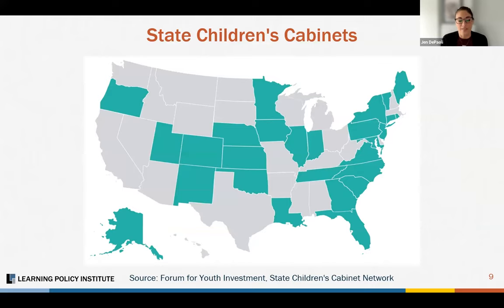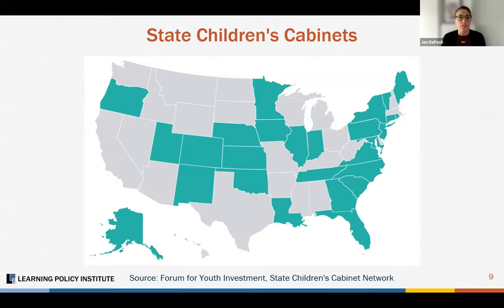Many states and localities have established children's cabinets to help achieve a whole-child vision and take a more collaborative and coordinated approach to decision-making and service provision. Children's cabinets, often convened by the governor, bring together heads of government agencies from education, health and human services, housing, child welfare, transportation, labor, juvenile justice, and other agencies, with the goal of facilitating a comprehensive approach to serving children and youth, strengthening partnerships, and improving coordination across state and local government. Many other states have convened cross-agency bodies to improve service coordination or specific task forces to tackle identified areas of need.